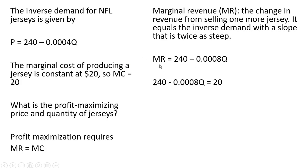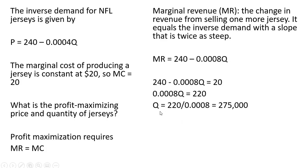Now if we set this marginal revenue equation equal to $20 of marginal cost, we've got one equation and one unknown. We'll solve for Q — subtracting 20 from both sides and dividing through by 0.0008. The profit-maximizing quantity of jerseys to sell is 275,000.